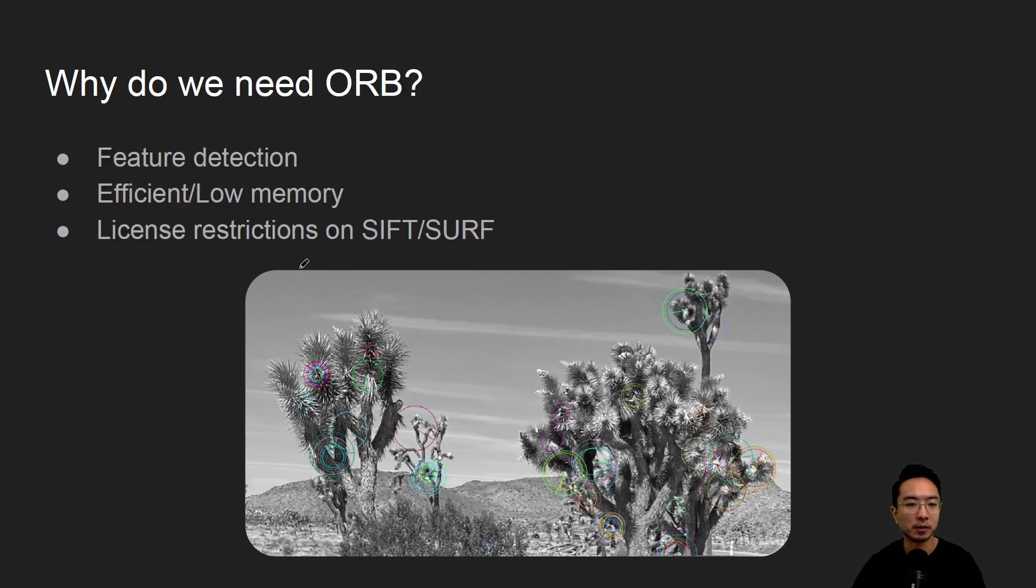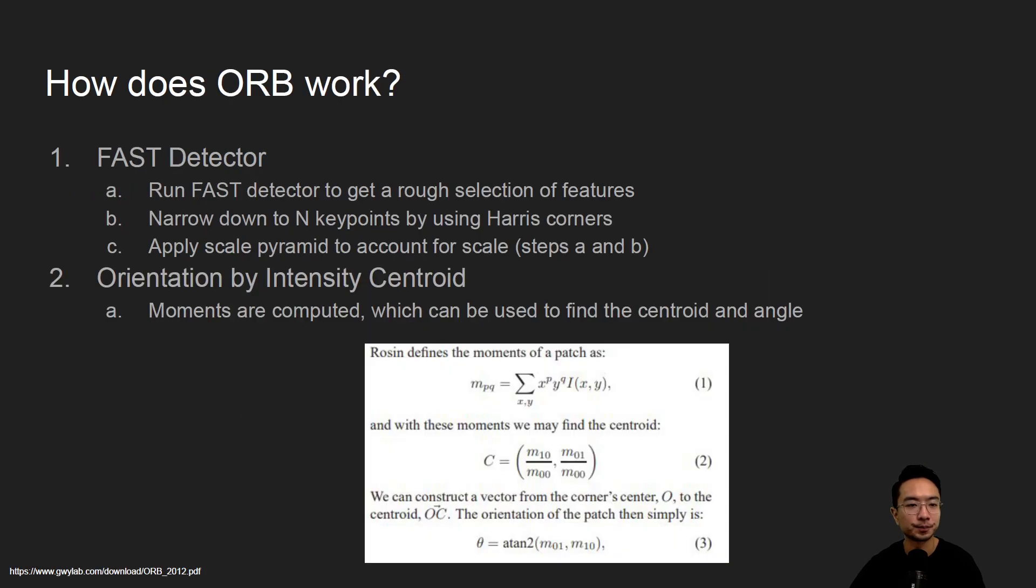So why do we need ORB? It's a feature detection method, it's efficient, and low memory. And like we were saying, it's for license restriction issues that were placed on SIFT and SURF a while back.